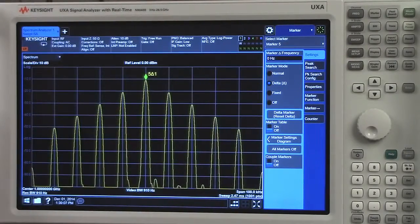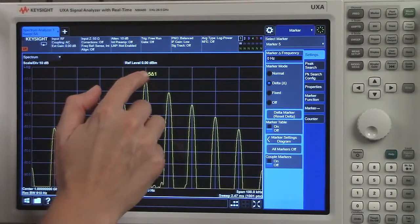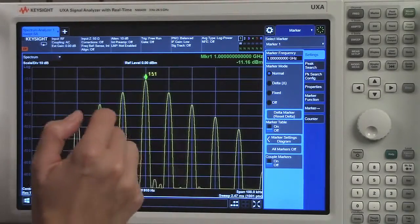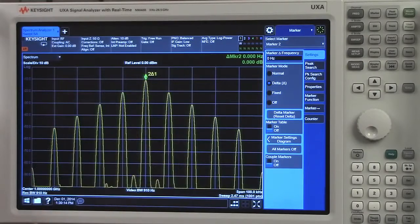Now all of these markers are sitting on top of one another. And to select different markers, you can just tap on the marker, and I want to select marker two.